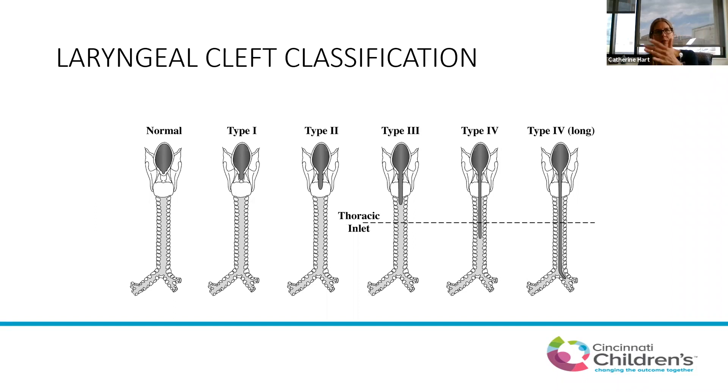For a quick overview of cleft classification: the trickiest to diagnose are really the type ones and the deep notches. Those are often kids who are otherwise pretty normal and healthy but aspirating, and you find just a little type one cleft — which can be a big game changer. The more involved type three and four clefts are a little less subtle from a diagnostic standpoint.